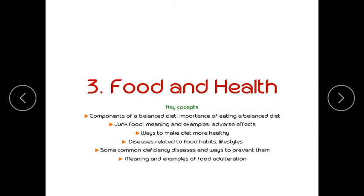Good morning students. This is Lesson 3: Food and Health. In this chapter you will study about components of balanced diet, what is balanced diet, importance of eating a balanced diet, junk food — its meaning and examples — ways to make diet more healthy, diseases related to food habits and lifestyles, common deficiency diseases and ways to prevent them, and meaning and examples of food adulteration.